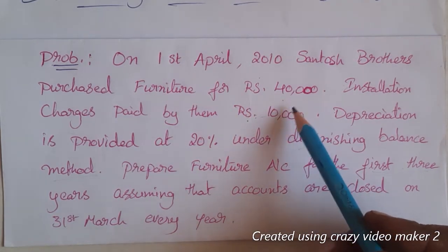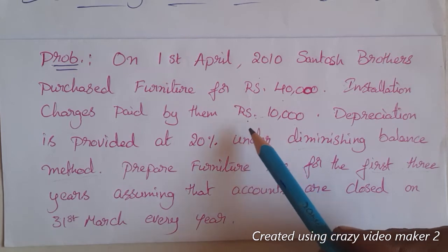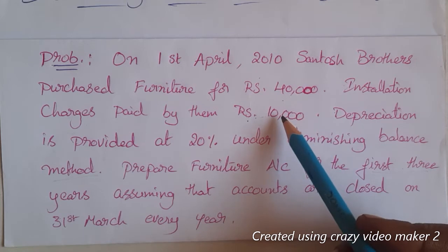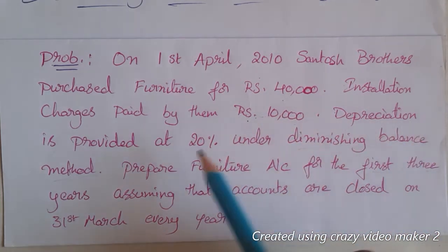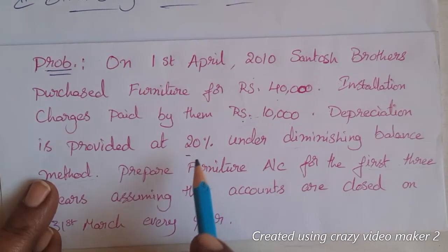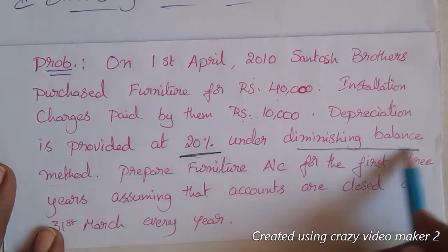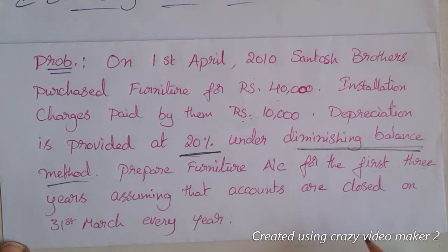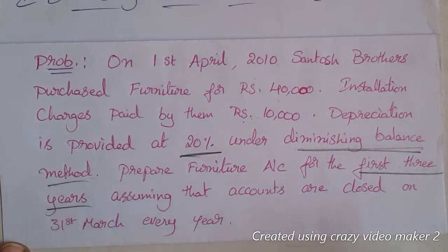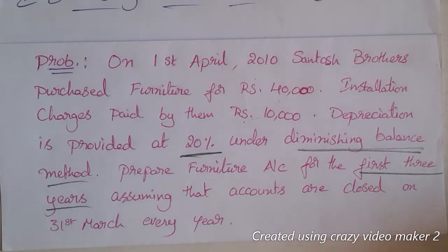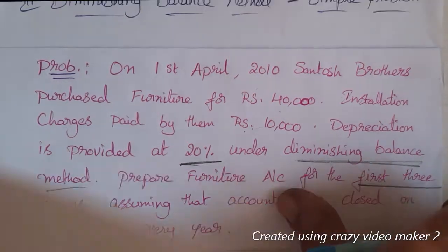So the furniture was purchased for ₹40,000, and ₹10,000 was spent on installation charges. The total cost of furniture is ₹50,000. We have to prepare the furniture account using the diminishing balance method for the first three years, following the 31st March financial year.